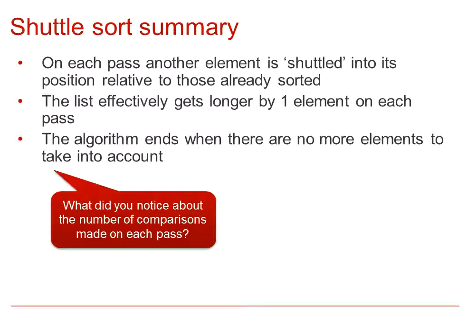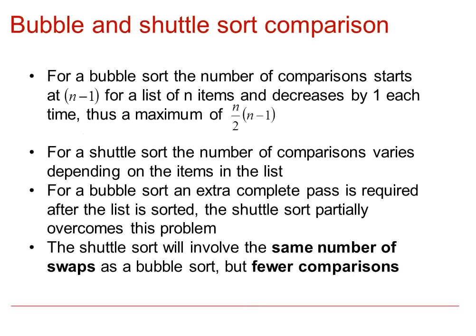You may have noticed that the number of comparisons made on each pass did not follow any systematic or logical progression. If we compare the bubble and the shuttle sort, then for a bubble sort, we notice that the number of comparisons started at n-1 for a list of n items and decreased by one each time. Thus, there was a maximum comparison of half n times n-1.